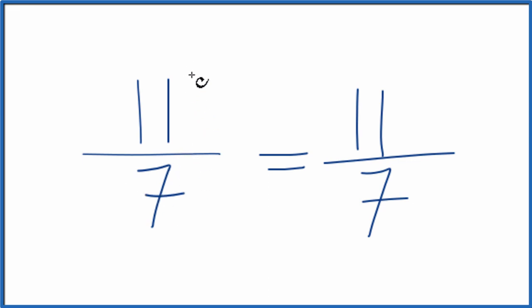Note that it is an improper fraction. We have the numerator, 11, that's greater than the denominator, 7. So we could change it to a mixed number. Let's do that.